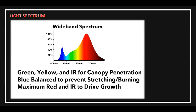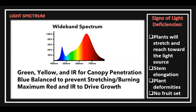Signs of light deficiencies: Number one, plants will stretch and reach towards the light source. Two, stem elongation. Three, plant deformities. And four, no fruit set.